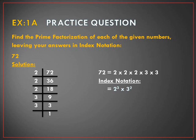So the prime factors of 72 are 2 × 2 × 2 × 3 × 3. We are also required to leave our answer in index notation, therefore we write it as 2 to the power 3 × 3 to the power 2, since 2 is repeated 3 times and 3 is repeated 2 times.